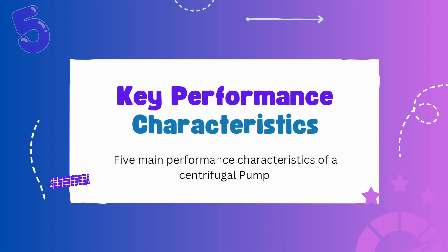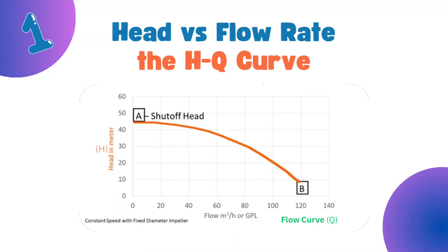Key Performance Characteristics. Let's break down the 5 main performance characteristics of a centrifugal pump. First, head vs. flow rate, the HQ curve. This is the main performance curve. As flow increases, the head usually decreases. Think of it as a trade-off. High flow, lower head, low flow, higher head.